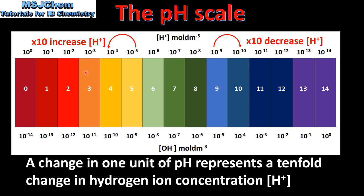If the pH decreases from 3 to 1, that represents a 10 times 10, which is a hundred times increase in the hydrogen ion concentration. If the pH increases from 9 to 10, that represents a 10 times decrease in the hydrogen ion concentration. And if the pH increases from 11 to 14, that represents a 10 times 10 times 10, which is a thousand times decrease in the hydrogen ion concentration.